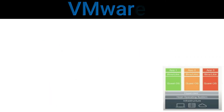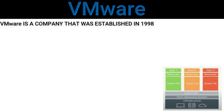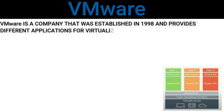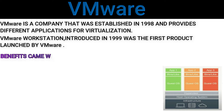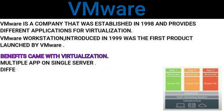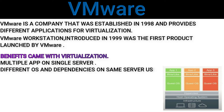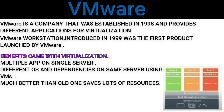Now if we talk about the more modern era starting around 1998 — VMware was established in 1998 and provided applications for virtualization. They made software able to run different applications on the same server through virtualization. The benefits were multiple apps on a single server, different operating systems and dependencies on the same server using virtual machine models, saving lots of resources and cost compared to the old approach.